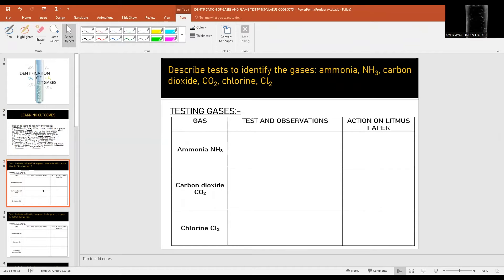I will share tests and observations for all the gases mentioned in the SLO. I will also talk about their action on litmus paper. So let's start testing gases. First gas is ammonia NH3. The test and observation: it's a pungent smell gas and when a glass rod dipped in hydrochloric acid is brought close to this gas, white dense fumes will be produced.